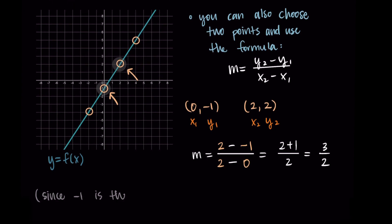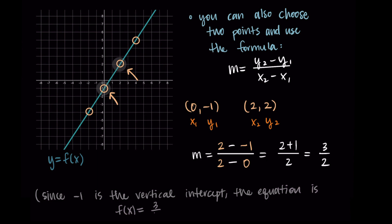Before we move on, I just want to make one more comment. We have future videos where we talk about writing the full equations — here we're just talking about slope — but the vertical intercept is at negative 1, so the b value would be negative 1. We could write this as f(x) equals (3/2)x minus 1. That's the formula for this line; we'll practice more on how to do this later.